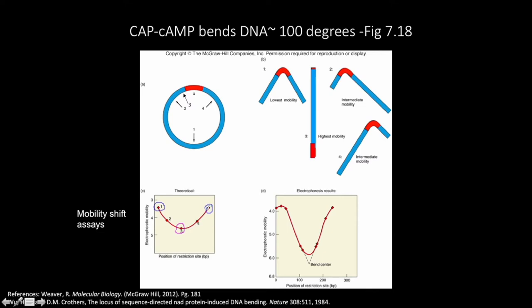In Part D of the figure, you can see real data from this experiment. In the real experiment, the researchers mapped the restriction sites very carefully and were thus able to estimate the bending angle to be roughly 100 degrees.